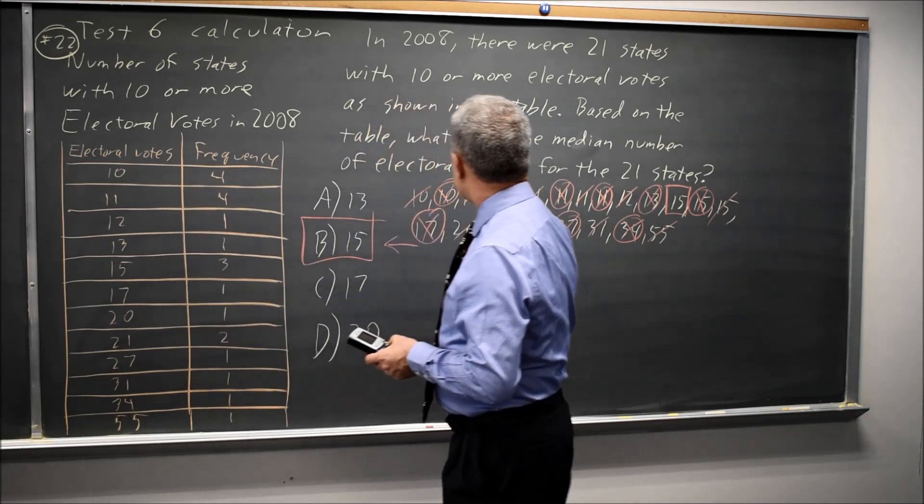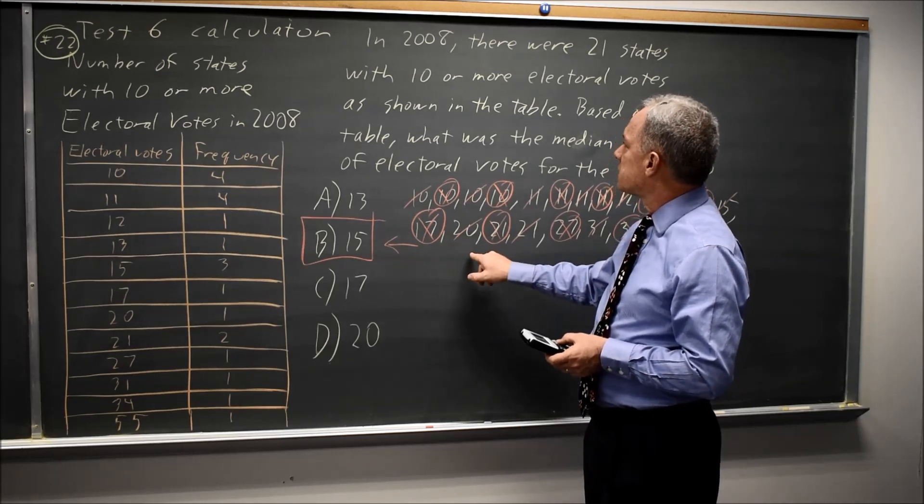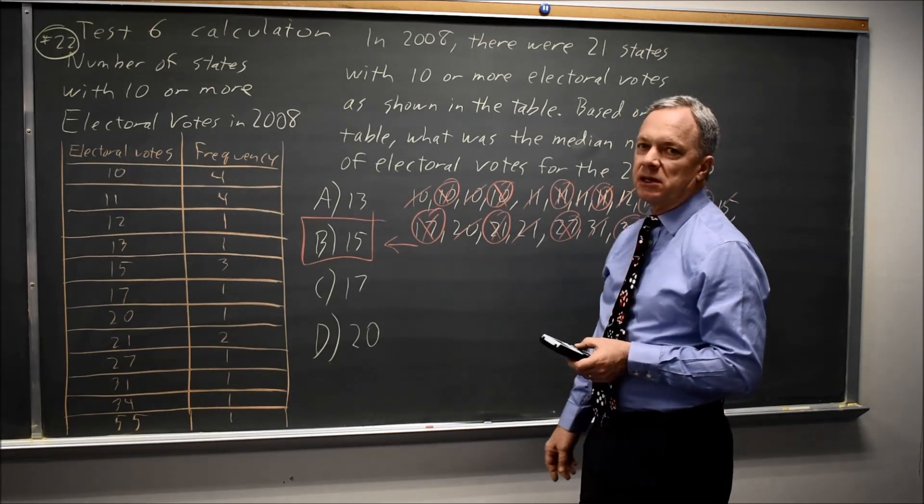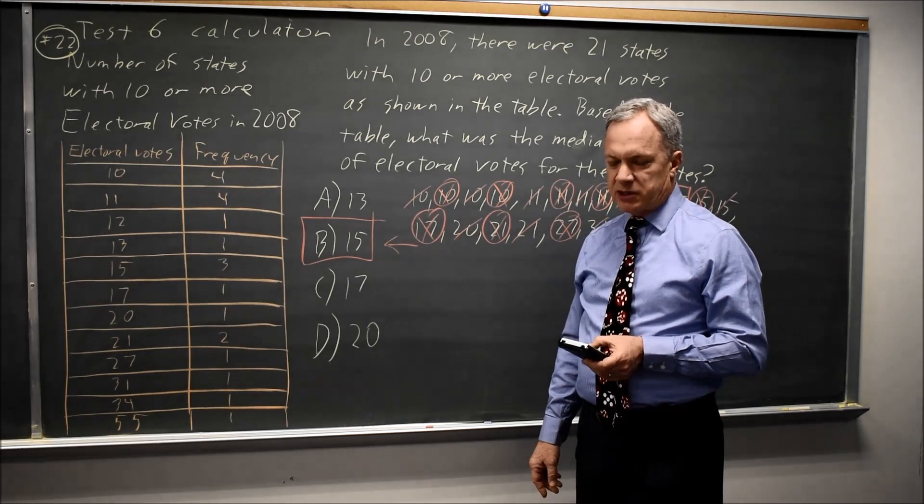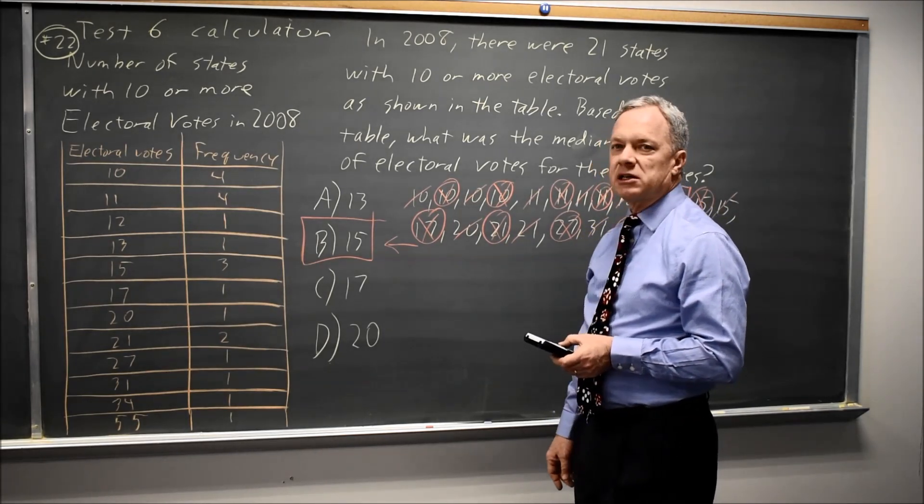It gives you both X-bar, which is the mean, that's the first one on the list, and then the median, you scroll down with your down arrow until you get to MED, and that will show the median is 15.